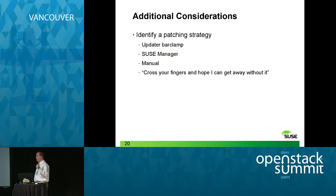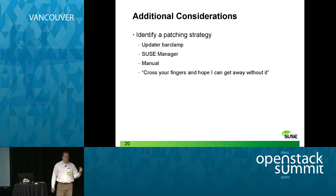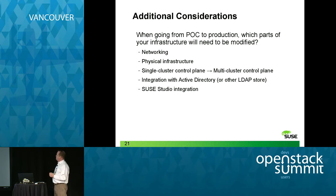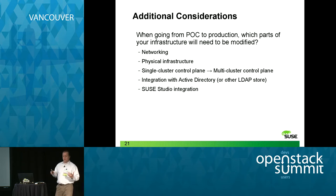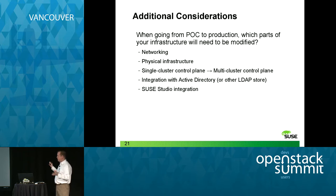Additional considerations — moving fast. Identify a patching strategy: you can use the bar clamp plug-in in the admin server to run patches automatically, use SUSE Manager, do a manual process, or cross your fingers. You also need to think about the differences between a proof of concept versus a production deployment. In a POC you have more room for error on networking and can put all services on a single cluster — in production you spread them out. You may wait to do Active Directory integration until you're in production.